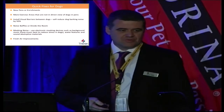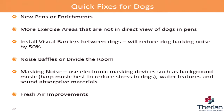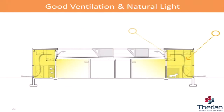Some quick fixes for dogs: new pens and other forms of enrichment, giving them time to get out outside so they don't go kennel-crazy, more exercise areas not in direct view of other dogs, installing visual barriers between dogs, noise baffles, and dividing the room up. By the way — harp music is really, really good for dogs. I went to Houston SPCA and they have harp music going all the time; I'd go bonkers with it, but it was amazing how calm the dogs were. Always think about fresh air improvements, good ventilation, natural light, and making sure we're moving air in through the pens and out.